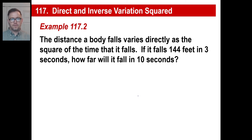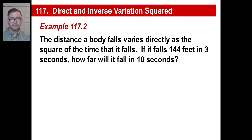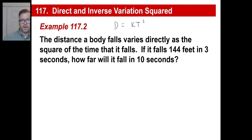The distance a body falls varies directly as the square of the time that it falls. Go ahead and pause it if you need to and write our basic equation for that sentence. The distance is going to be varying directly, so that's a K there, and the square of the time that it falls — so that's going to be T squared. Makes sense.